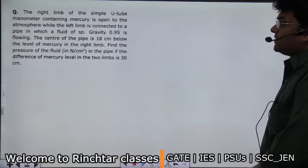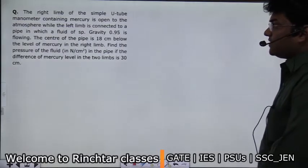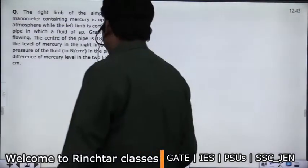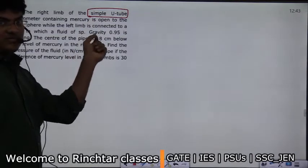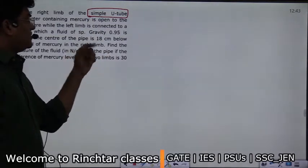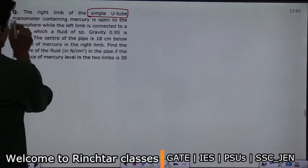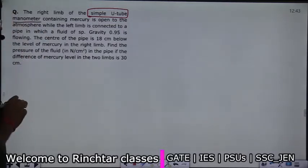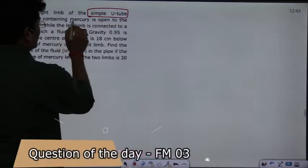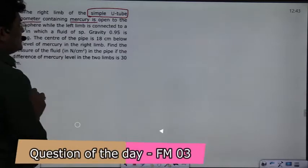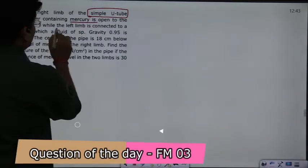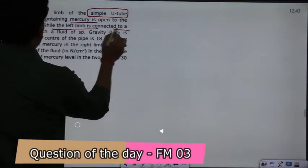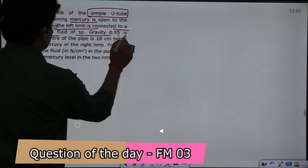The right limb of a simple U-tube manometer containing mercury. A simple manometer directly gives you the difference of pressure. A manometer is basically a pressure measuring device in which mercury is stored, and it is open to the atmosphere, while the left limb is connected to the pipe in which the fluid of a given specific gravity is there.